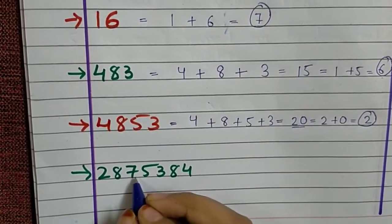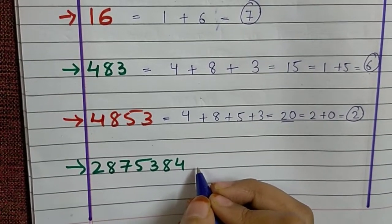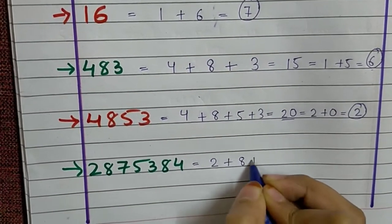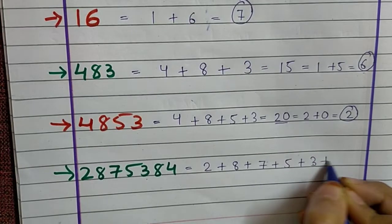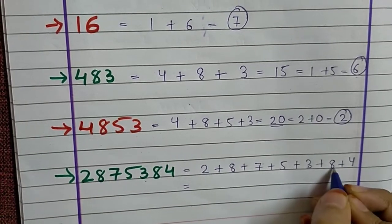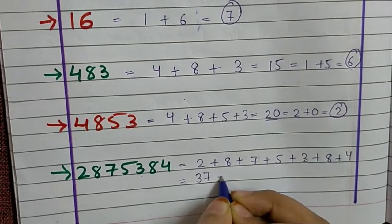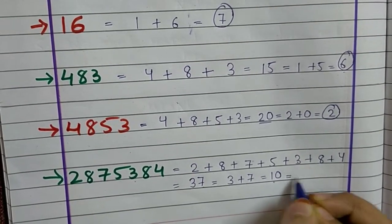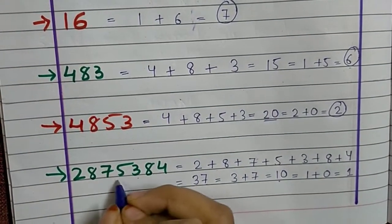The last number is 2875384. It is a big number but don't worry, we will find the Beejank of this number as well. So let's start. 2 plus 8 plus 7 plus 5 plus 3 plus 8 plus 4. So the answer will be, yes you are correct, it will be 37. Again it is a 2 digit number. So 3 plus 7 is 10. Again we got a 2 digit number, so we will add again. 1 plus 0 is equal to 1. So the Beejank of this number is 1.